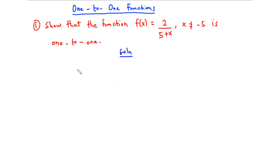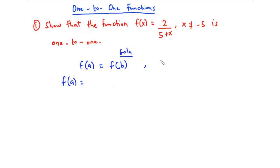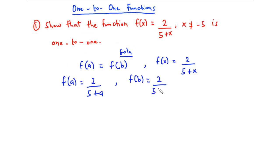For a function to be one-to-one, it means that f(a) should be equal to f(b). f(a) means we substitute a in place of x, and f(b) means we substitute b in place of x. So f(a) = 2/(5 + a) and f(b) = 2/(5 + b).